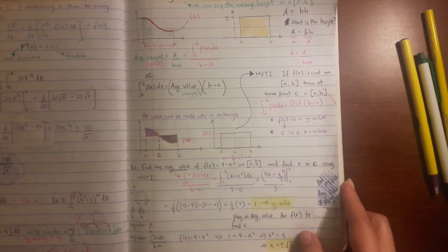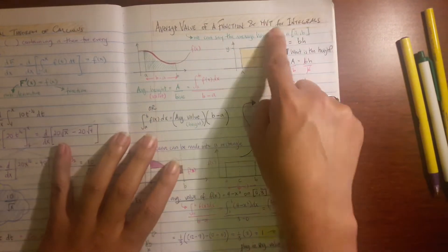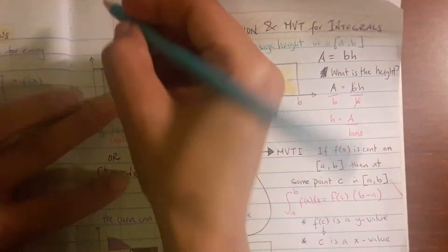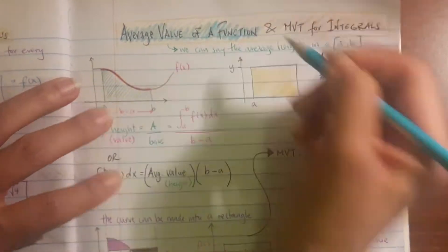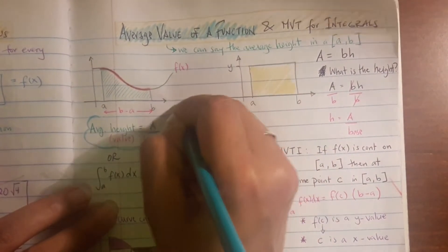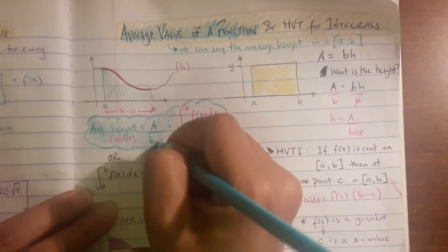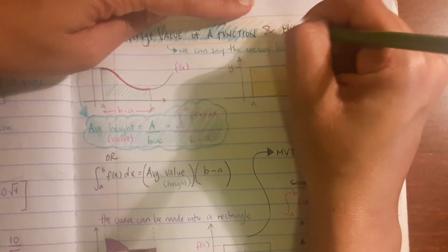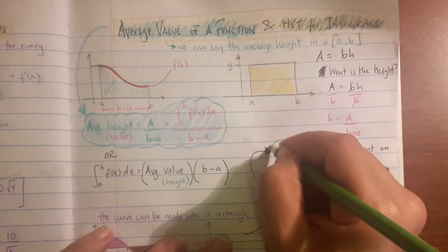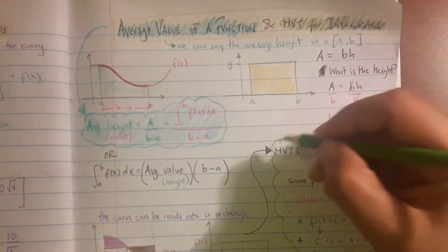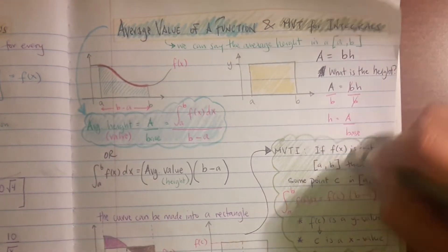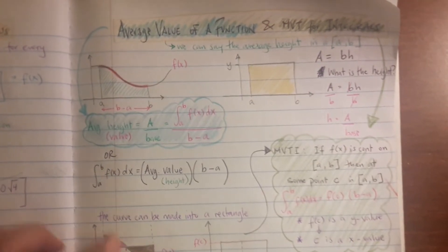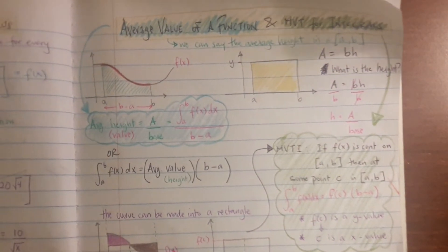We're going to color-code the two formulas we just learned — average value of a function and mean value theorem — so color in the title 'average value function' and the formula in one color, draw an arrow going down. Then use a different color for the mean value theorem and put a box around it. That's how you find the average value of a function and what the mean value theorem for integrals is — so let's practice.